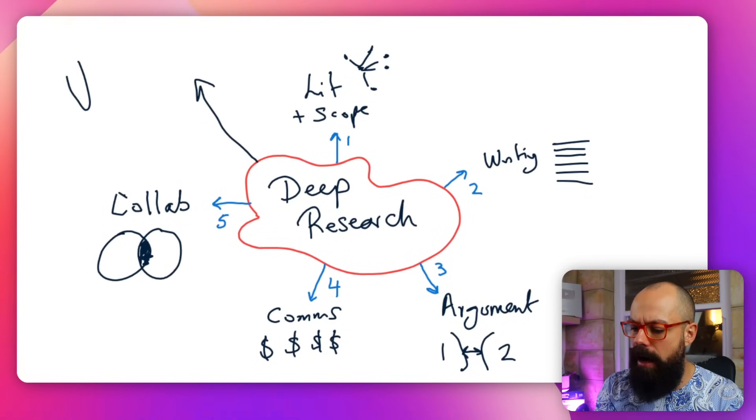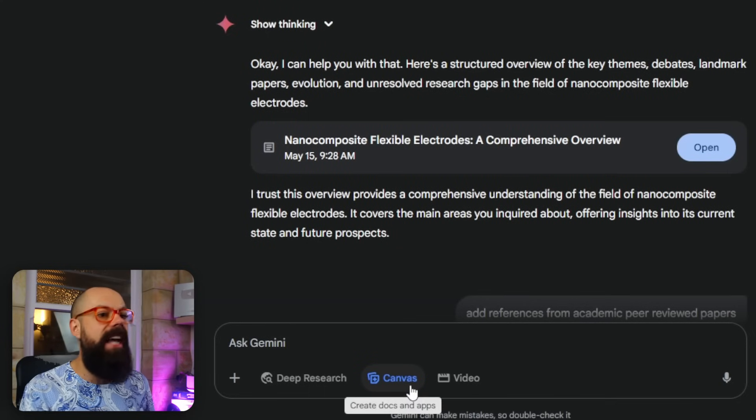Stay around because there's a bonus tip. The one thing about Gemini I recently started using properly is Canvas. Canvas is a really great tool — it allows you to interact with what it generates. Instead of regenerating everything when you give a new prompt, you can work on individual sections. I was using it for academia and research.